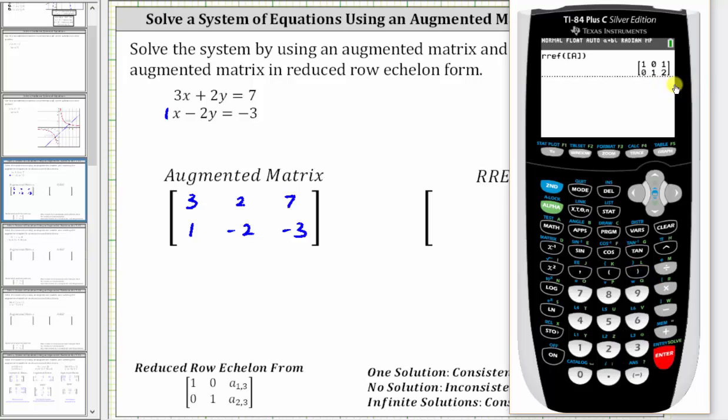Now we have the reduced row echelon form. Row one is one, zero, one. Row two is zero, one, two.